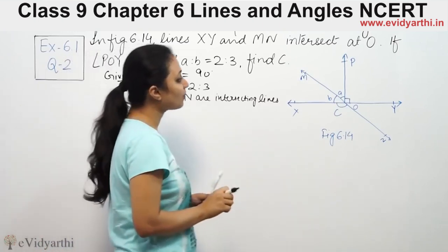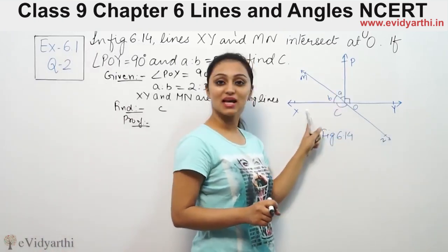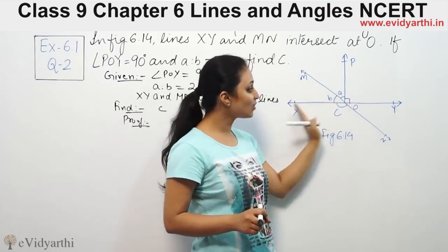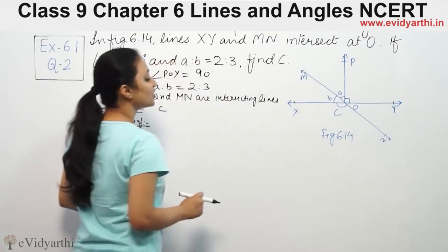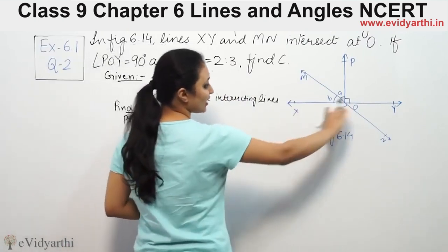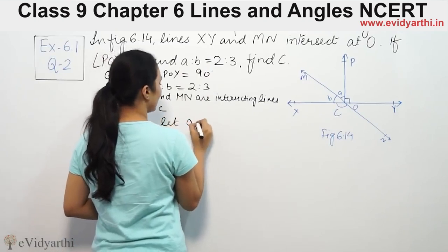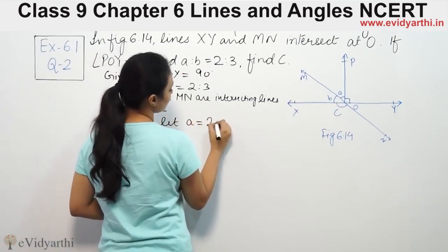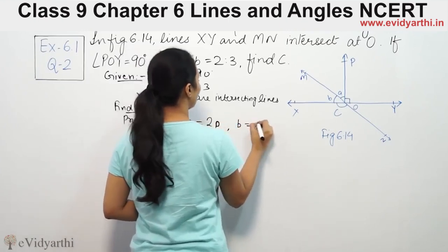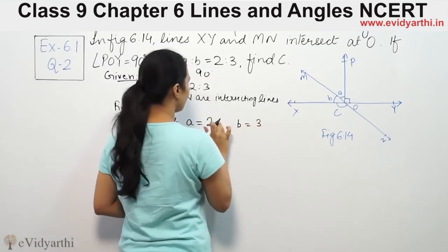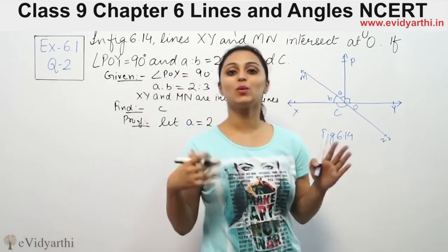Now, we know angle POY = 90°. Since XY is a straight line, angle XOP = 90°. We let a = 2p and b = 3p — you can use any variable that hasn't already been used in the problem.